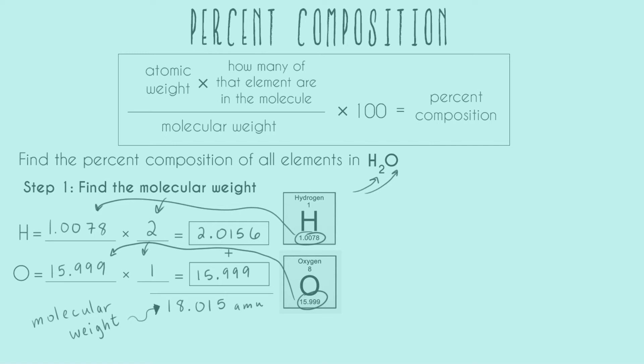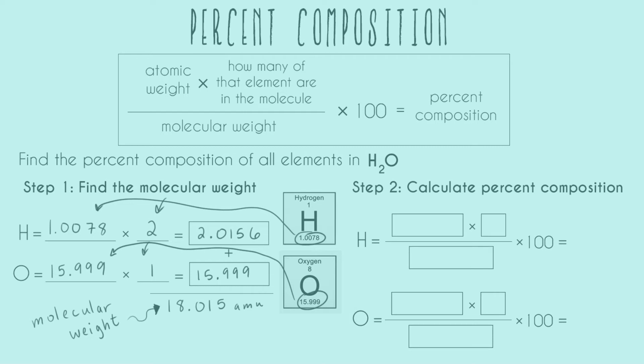So now we have the molecular weight. We can go ahead and plug everything into our percent composition formula. I've outlined it here - this is basically everything we're going to need to plug in. Let's look up at our box on top. First, we need the atomic weight of each element, which we can still take from the periodic table.